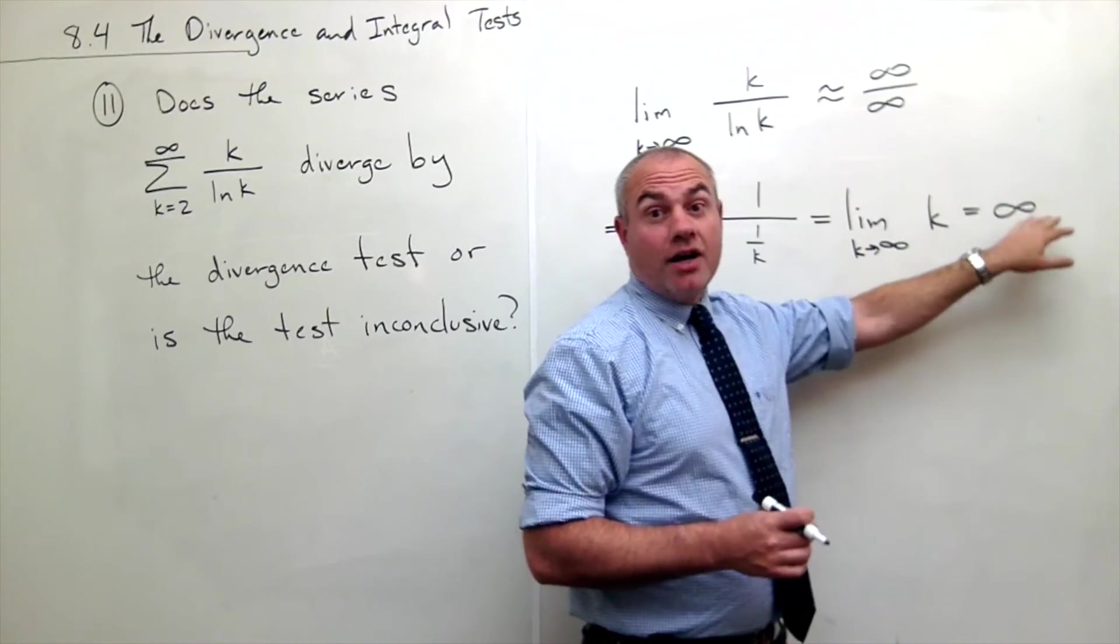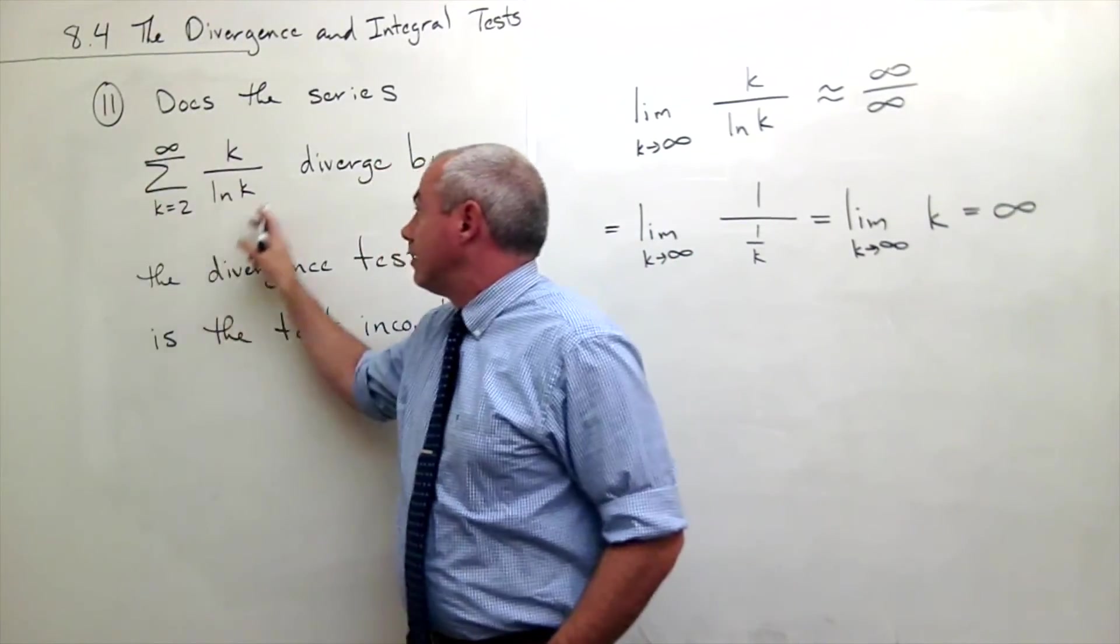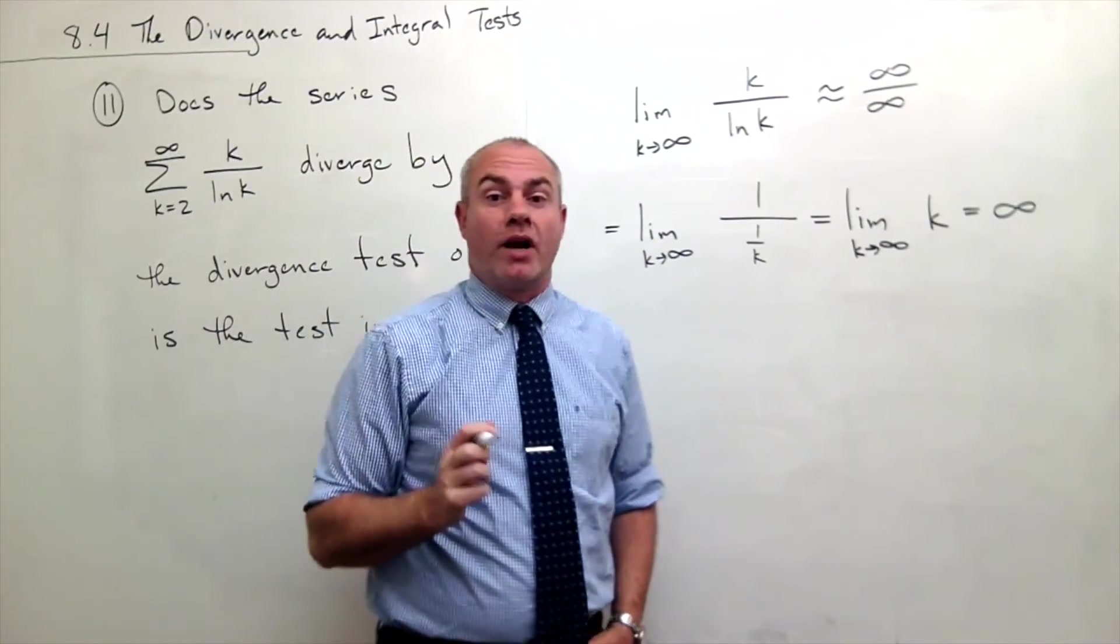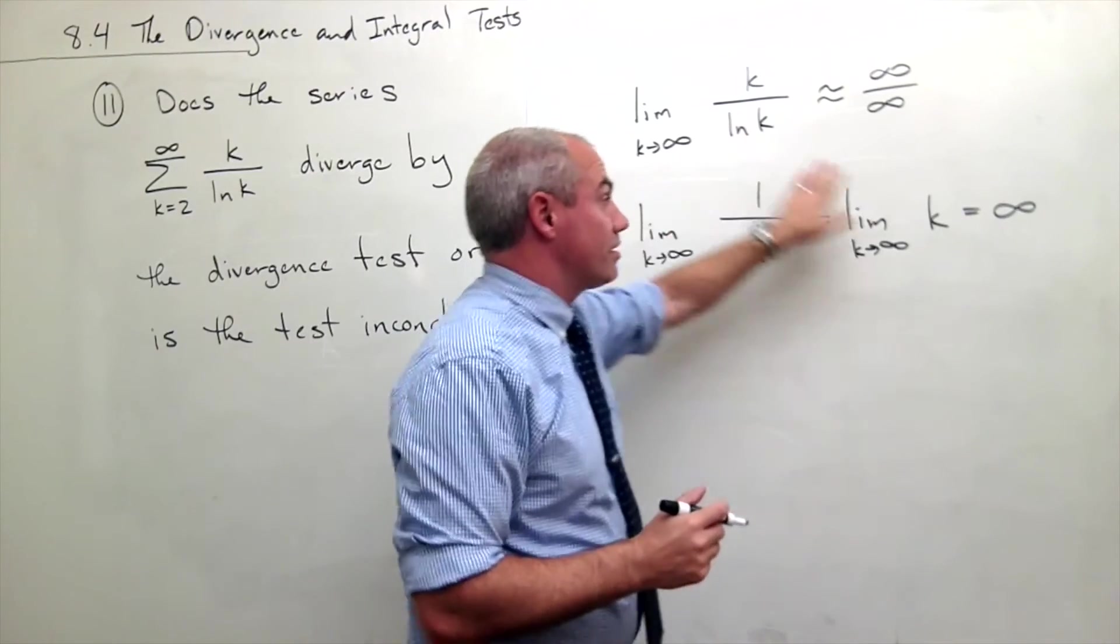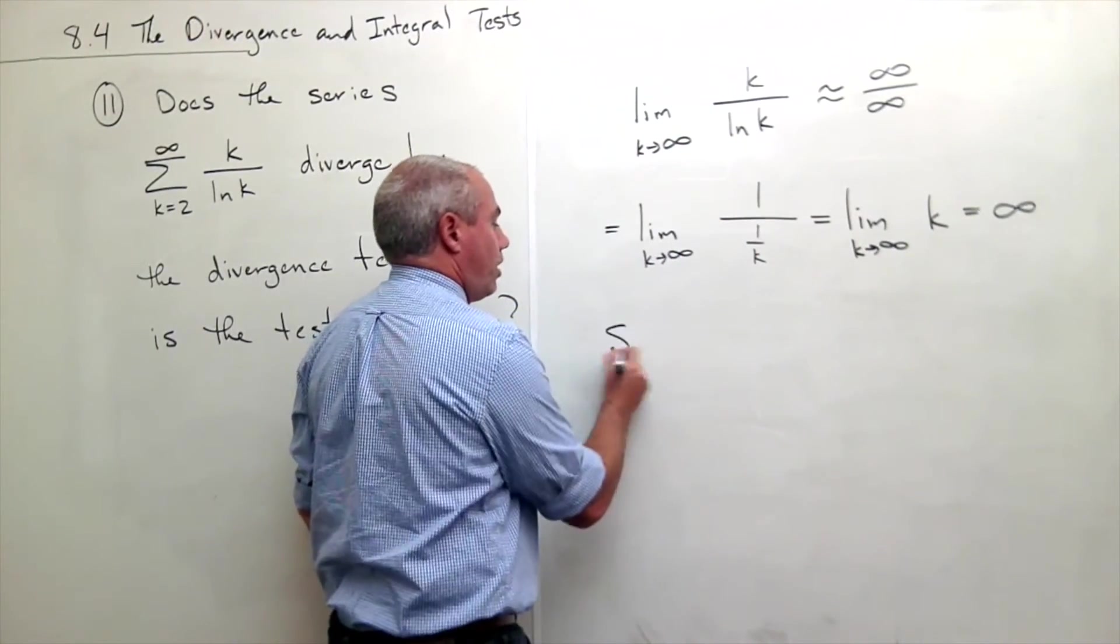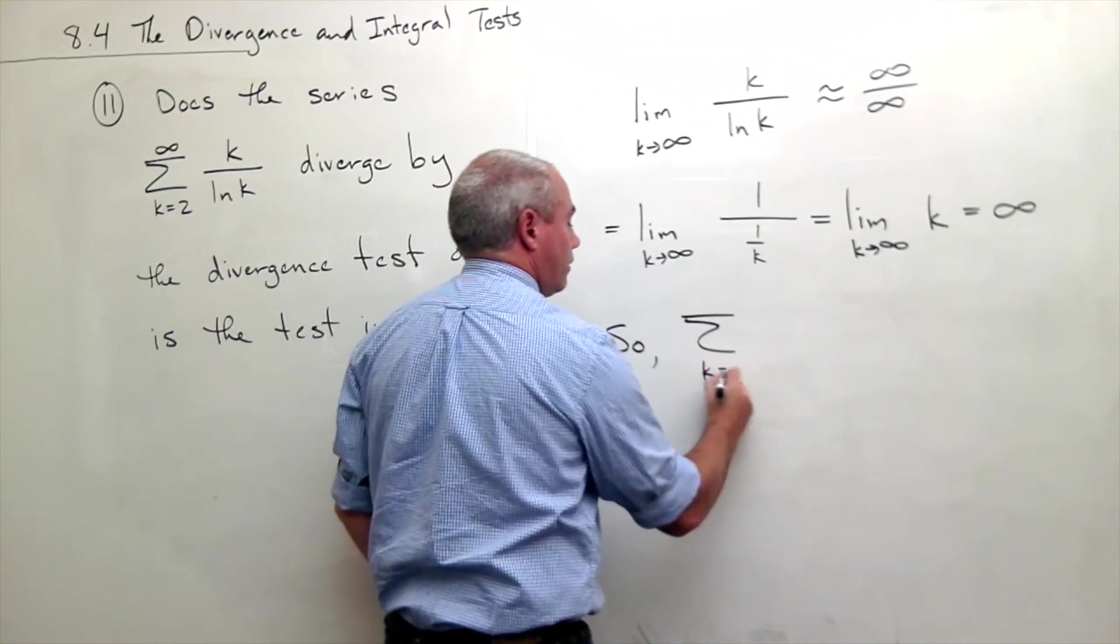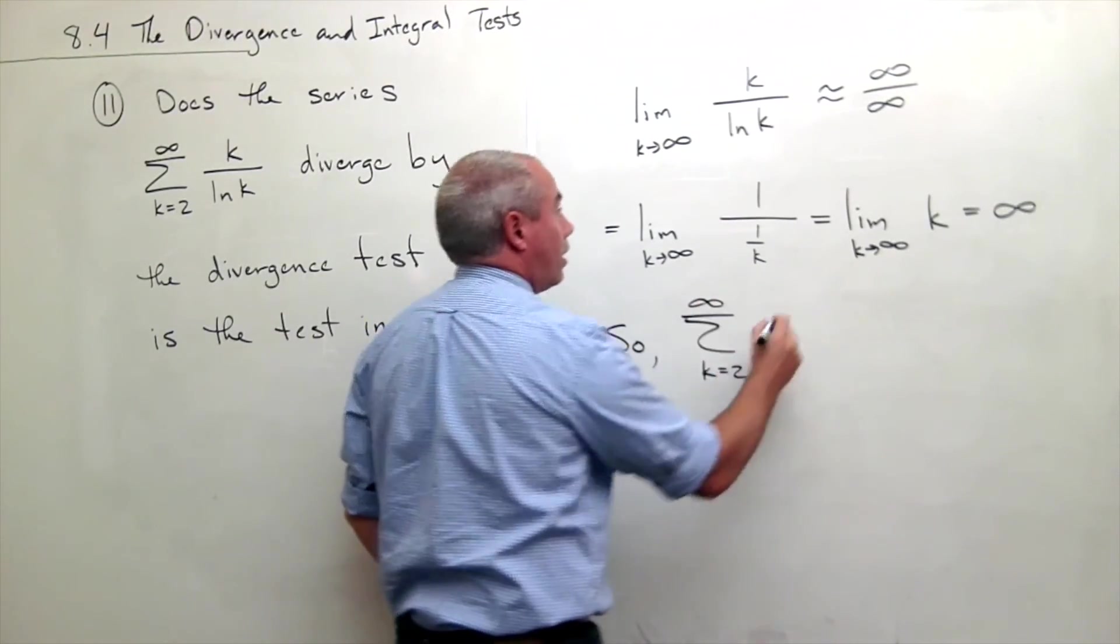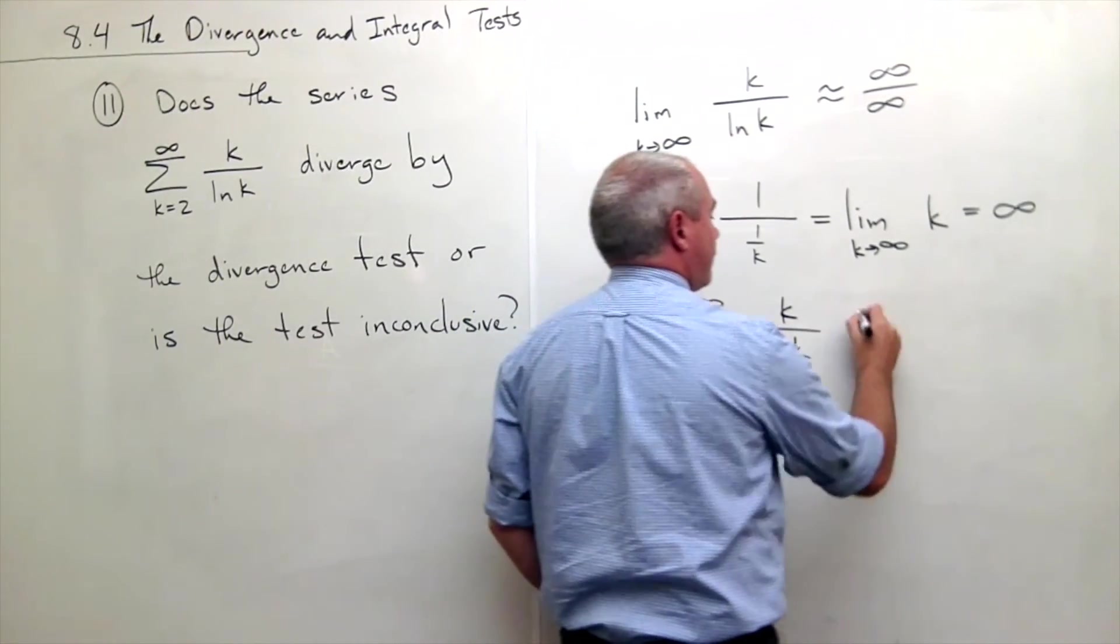which is very much not zero. So this series diverges. What I can say is: because the limit of the sequence was infinity, the sum k from 2 to infinity of k over ln k diverges.